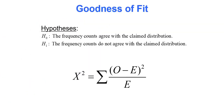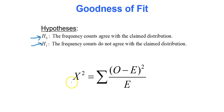Here are the hypotheses for the goodness of fit test. The null hypothesis is that the frequency counts agree with the claimed distribution, so observed and expected frequencies equal each other. The alternative hypothesis is that the frequency counts do not agree with the claimed distribution — observed and expected frequencies are not equal to each other, statistically significantly so.